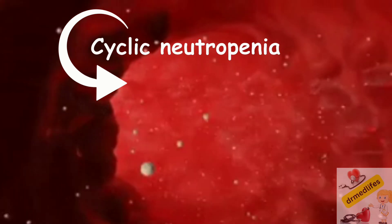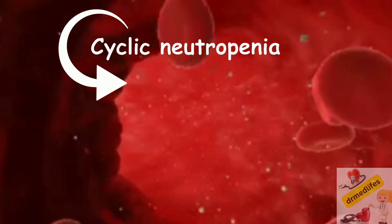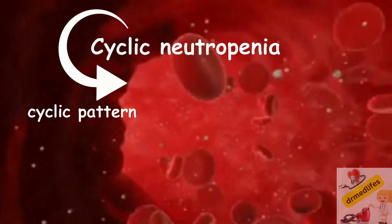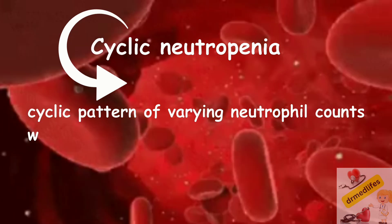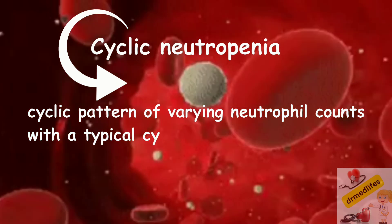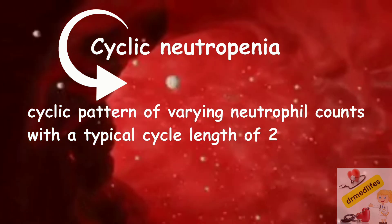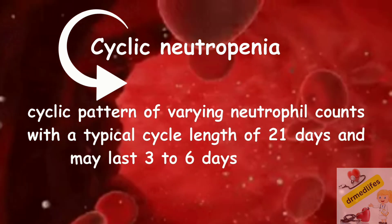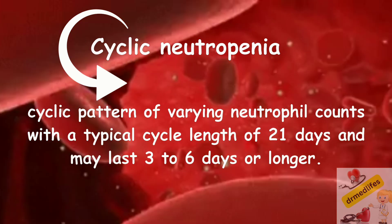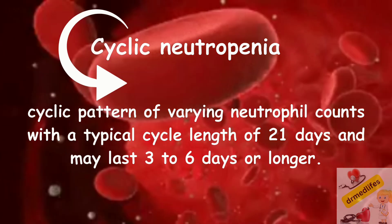The second type is cyclic neutropenia. This type shows a cyclic pattern of varying neutrophil counts, with a typical cycle length of 21 days, and the neutropenic phase may last 3 to 6 days or longer.